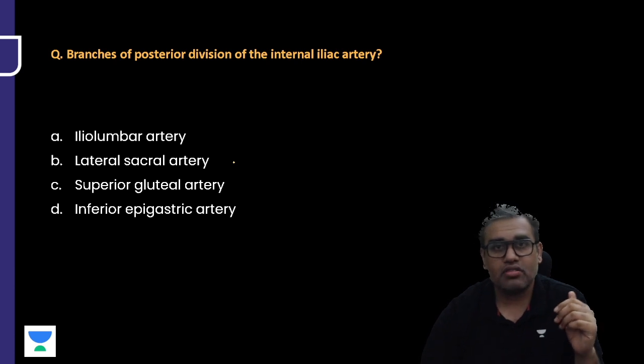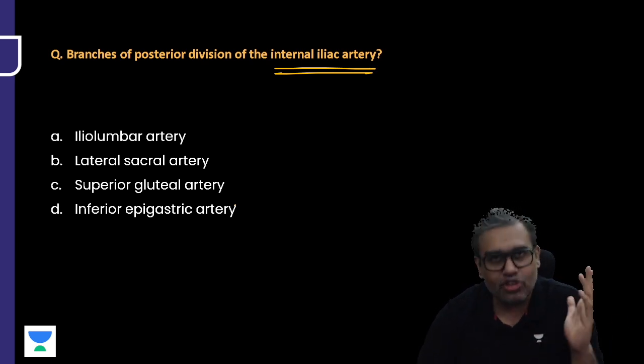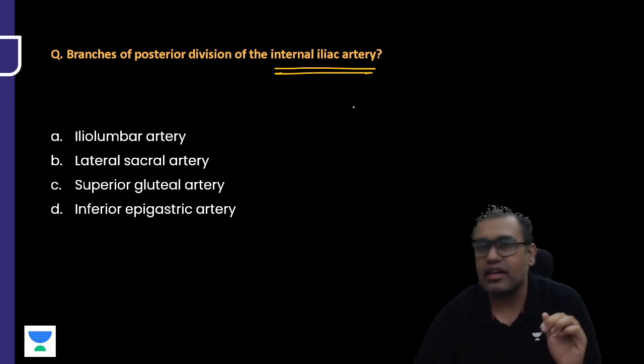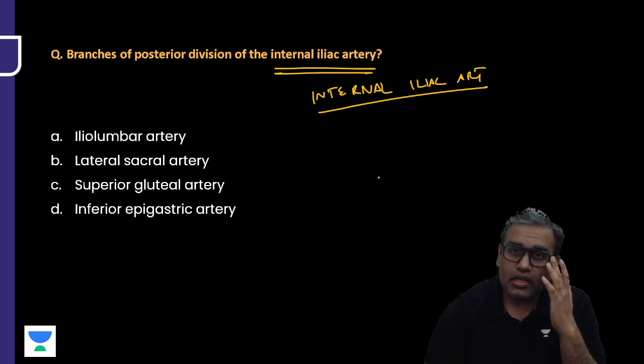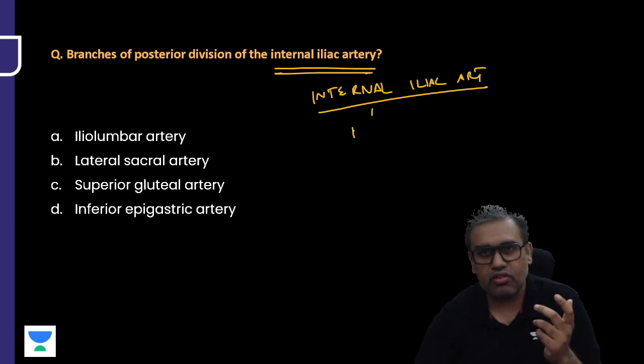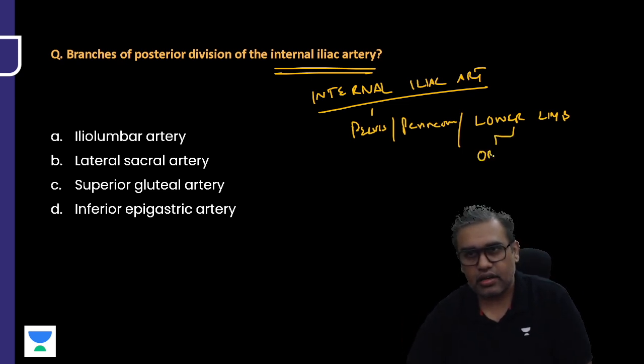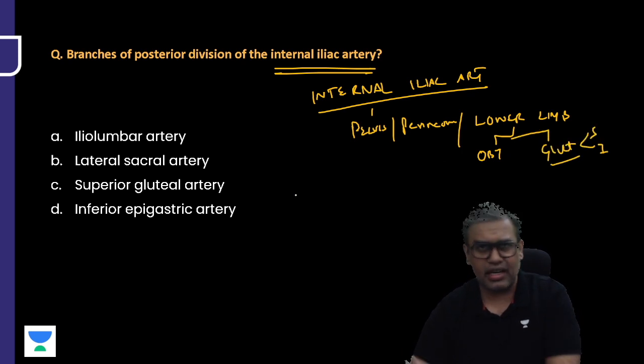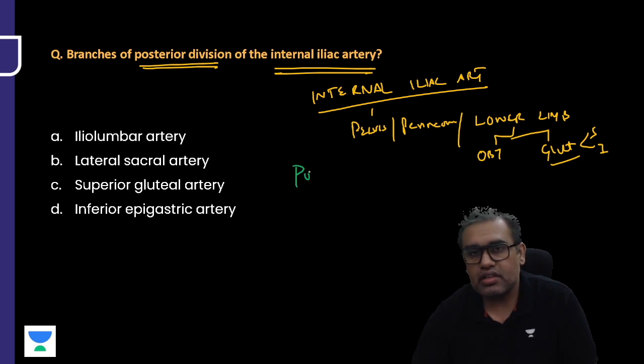A very good question: Branches of posterior division of the internal iliac artery. Internal iliac artery I used to teach in detail in our classes. The internal iliac artery comes from the common iliac artery and supplies the area of our pelvis and perineum. It gives some branches which go to the lower limb including to the gluteal region. What branches go to lower limb? We have obturator artery as well as the gluteal artery, both superior and inferior. They're asking what are the branches of posterior division.